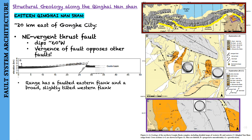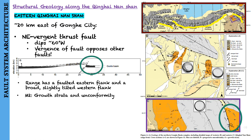The range exhibits a pronounced asymmetry with a faulted eastern flank and a broad, slightly tilted western flank. Within M2, there is evidence for growth strata, with dip angles in east-dipping strata progressively decreasing upsection. Near the top of the outcrop, an unconformity occurs where beds dipping around 31 degrees southeast are truncated by 22 degrees southeast-dipping beds immediately above, suggesting the fault was active when M2 was being deposited.